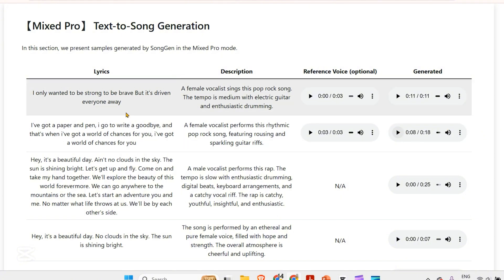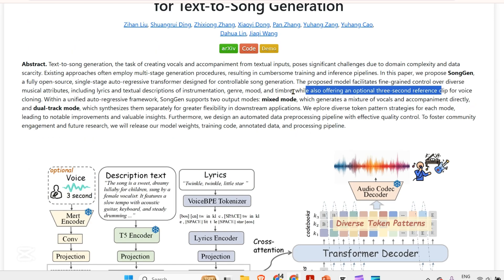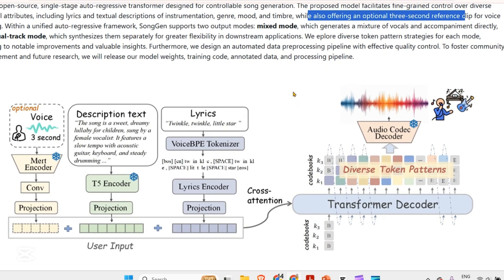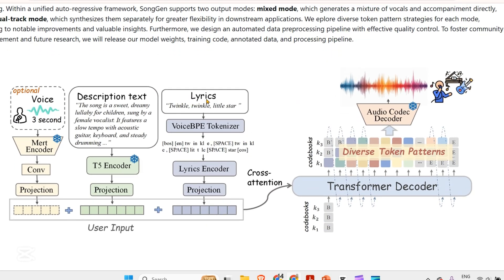I'm really, really mesmerized with the outputs. What they're using is pretty simple for us to understand. We can see that we have lyrics, and that lyrics is tokenized and changed into embeddings here. We have a description of text, which is the description of the song that you want. That is encoded by the T5 encoder here and put into another embedding. Then we have an optional three second voice using the MERT encoder. We encode that, combine all three embeddings, and then go ahead and use the transformer with cross attention, and the transformer outputs codebooks, which we decode to get the actual audio.